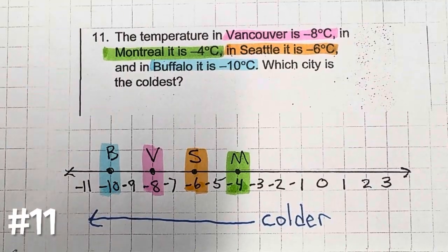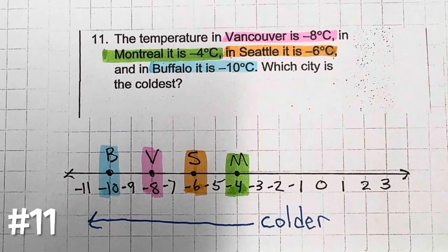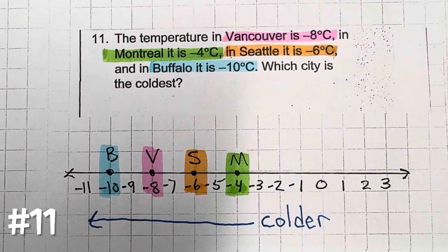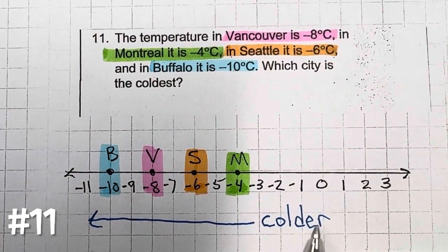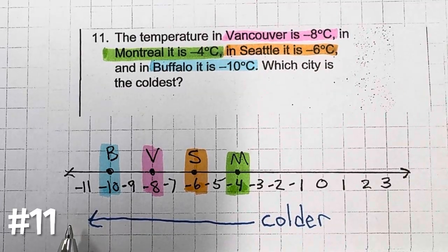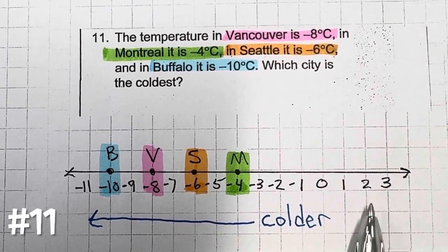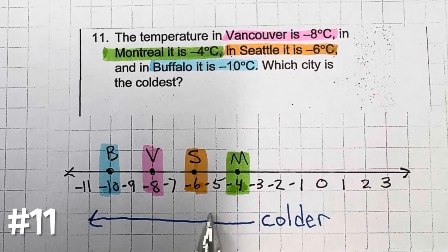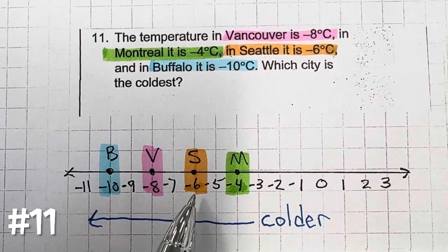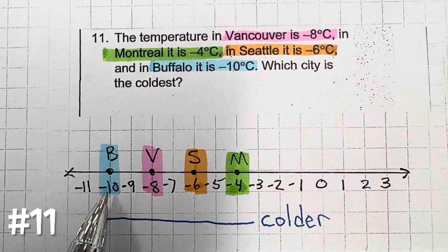Number 11: the temperature in Vancouver is negative 8 degrees Celsius. In Montreal, it is negative 4 degrees Celsius. In Seattle, it is negative 6 degrees Celsius. And in Buffalo, it is negative 10 degrees Celsius. As you go to the left on the number line, there are smaller values — it gets colder and colder. So ordering them: Montreal, Seattle, Vancouver, Buffalo. Buffalo, at negative 10 degrees Celsius, is the coldest city.